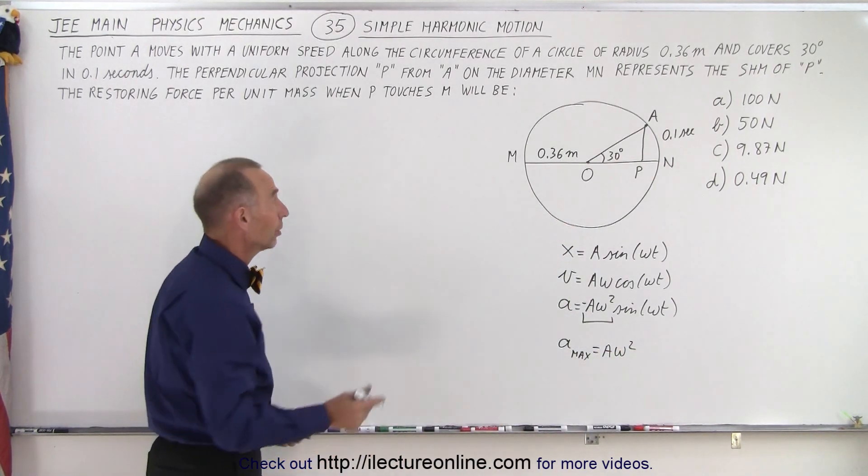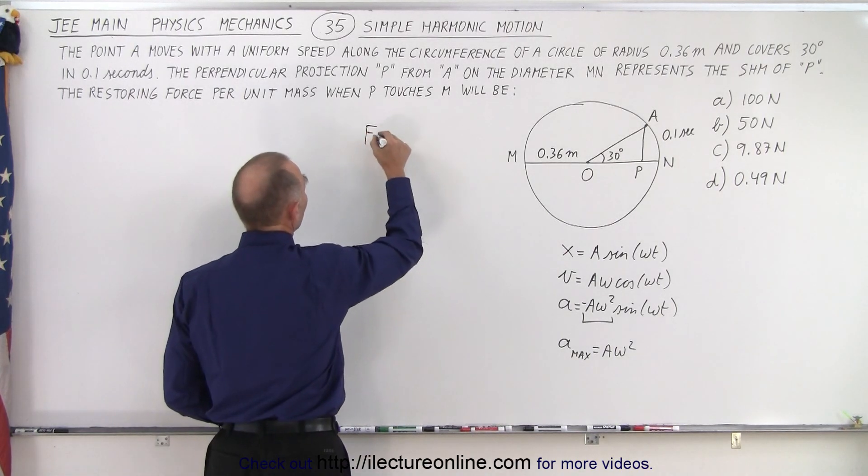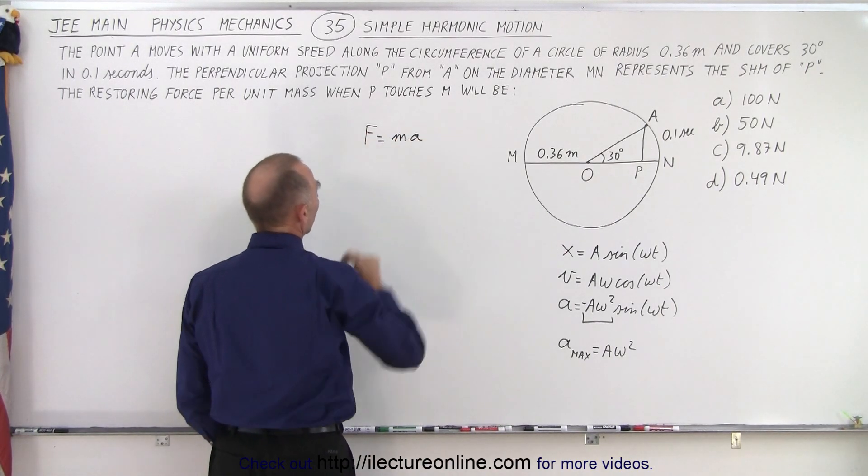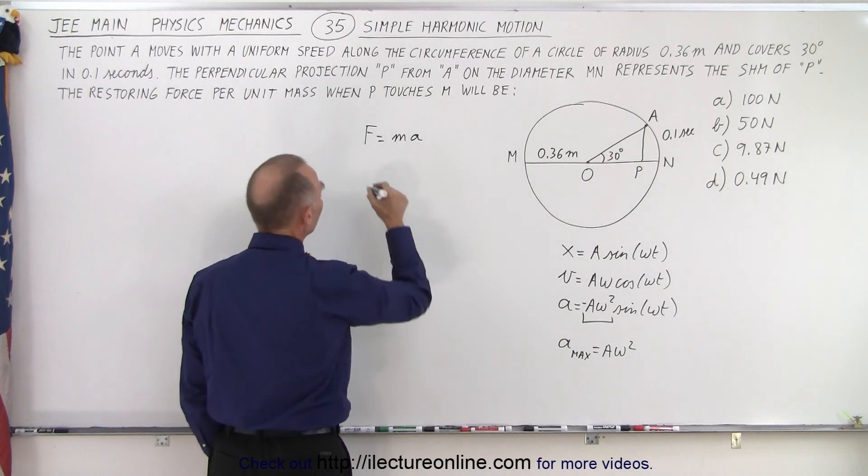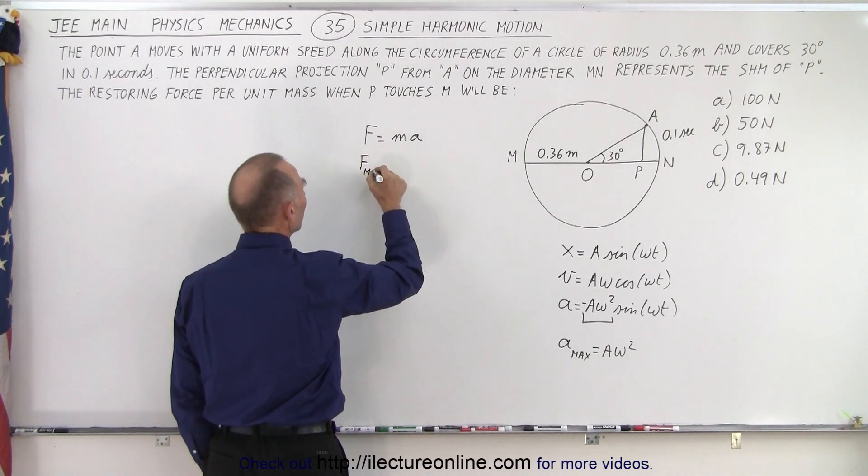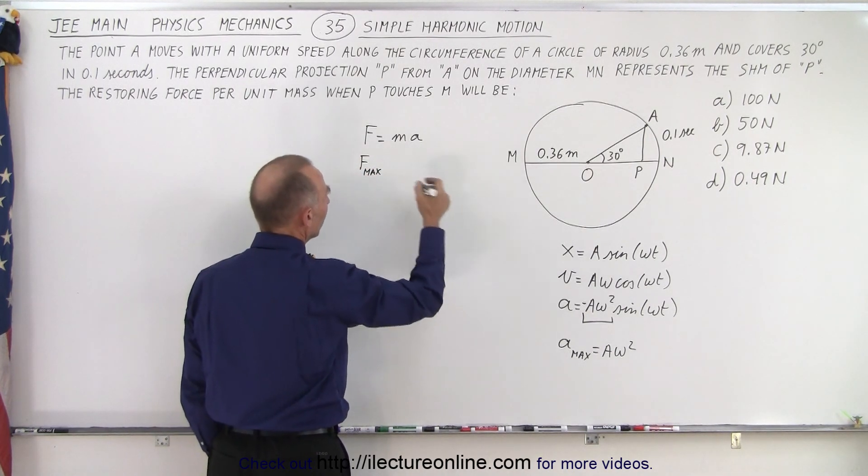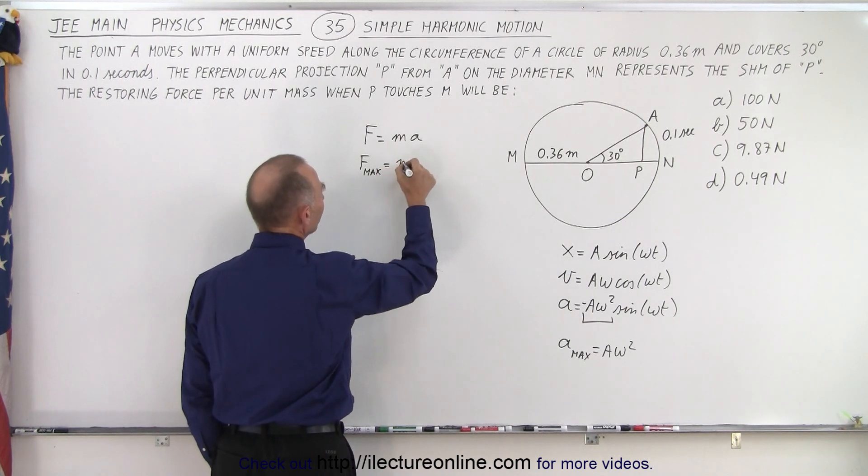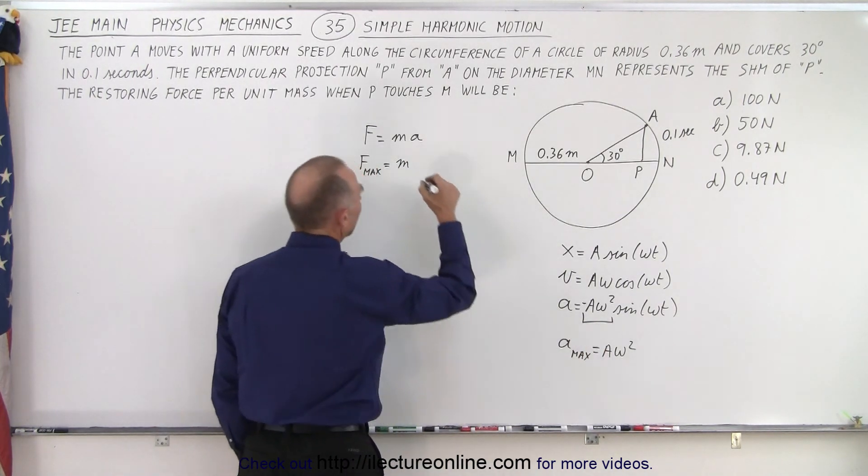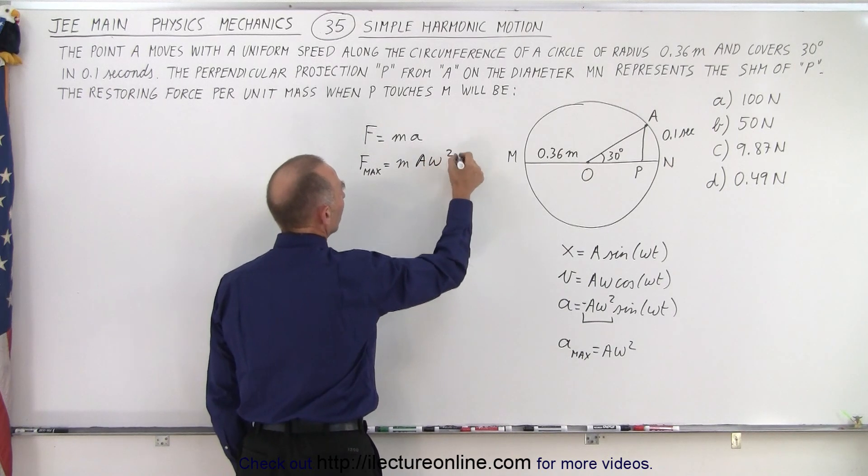Then we use the principle where we know that F equals MA. We take Newton's second law, F equals MA. So in this case, F max, the maximum restoring force applied to the particle, is going to be equal to the mass times the acceleration, which is equal to A Omega squared.